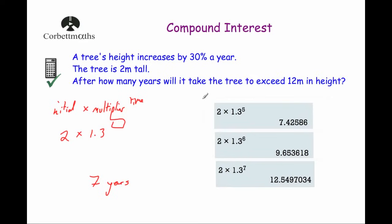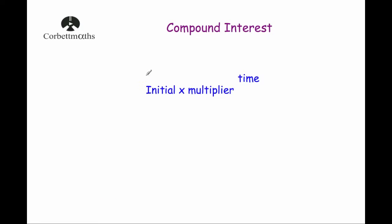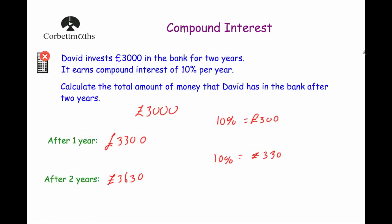For compound interest, it's very important to learn the formula: initial times the multiplier to the power of time. For non-calculator questions, just keep applying the percentage after each year, week, or month — whatever the time scale given in the question.